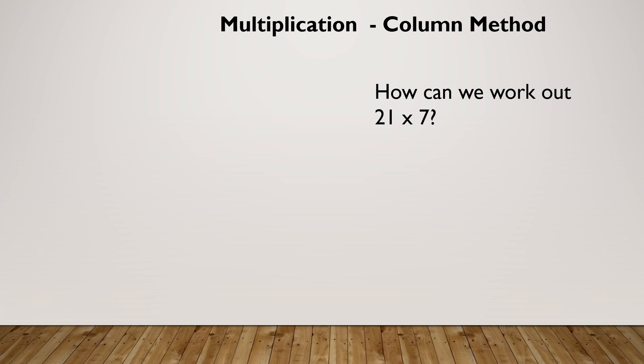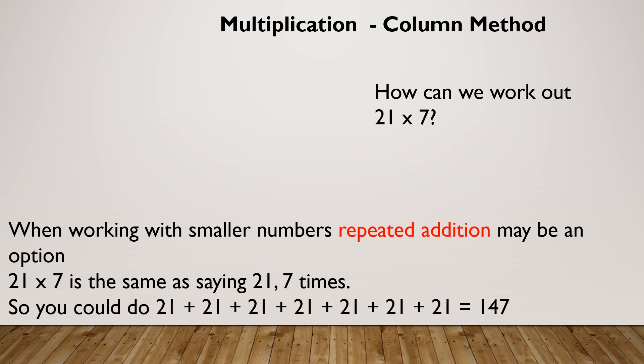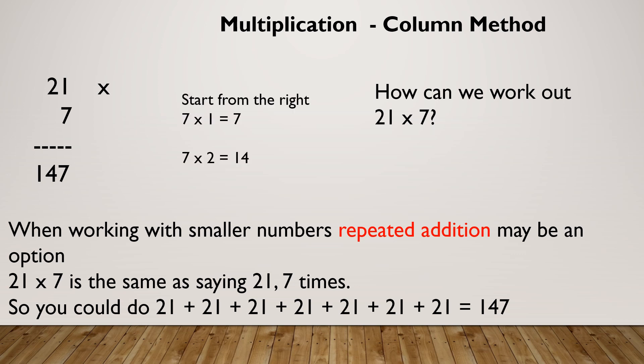So if I had to do 21 times by seven, if I'm working with smaller numbers, don't forget repeated addition might be an option. So 21 times seven is the same as 21 added together seven times. However, to use the column method, I would lay my sum out and start from the right. So I would do seven times by one, which gives me seven, and then seven times by two, which gives me 14.